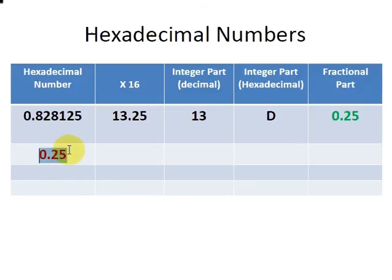So we have this number here now and we're going to multiply that by 16 and we get 4. Now the integer part of 4 is 4. The hexadecimal equivalent of the decimal number 4 is also 4. And the fractional part here is 0.